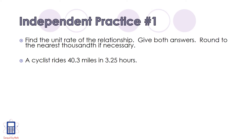Your job for this problem is to find the unit rate of the relationship. You'll need to give both answers and round to the nearest thousandth if necessary. A cyclist rides 40.3 miles in 3.25 hours. Pause the video, try it on your own, and unpause it when you're ready to check your work.